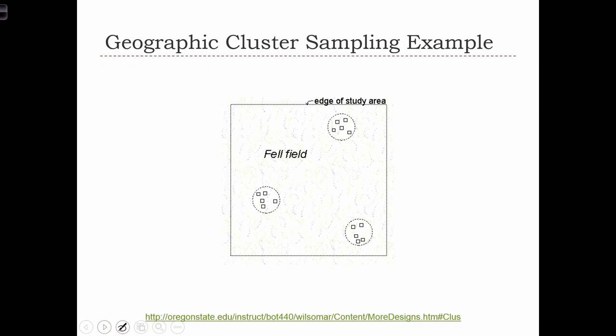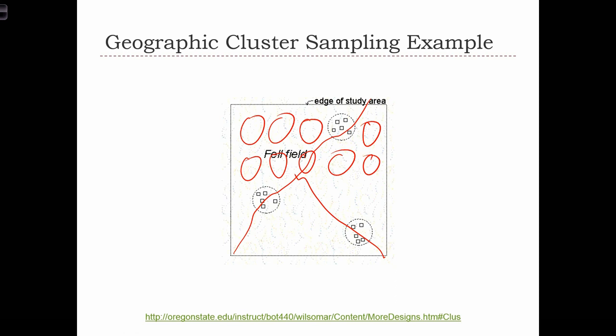Here's an example of cluster sampling in a geographic setting. We are doing a study of a fell field. We've divided the area up into multiple clusters. We're only showing three of the clusters here, but we have circles everywhere else that we've decided not to include in our sample. Suppose there's a road network that travels like this through our study area. We might decide to choose clusters along this road network because those are the areas that we can actually transport our measurement equipment to.